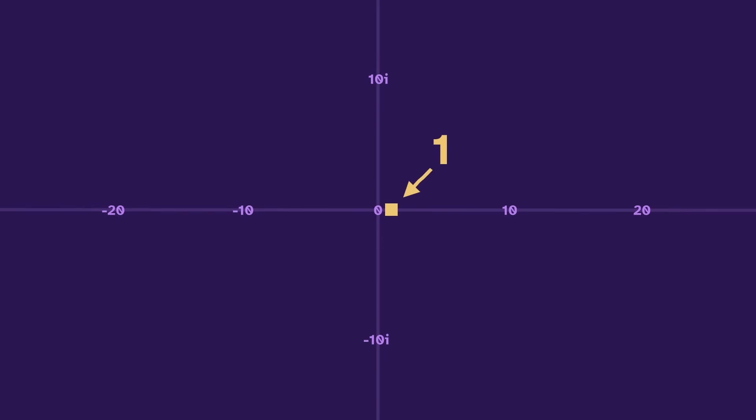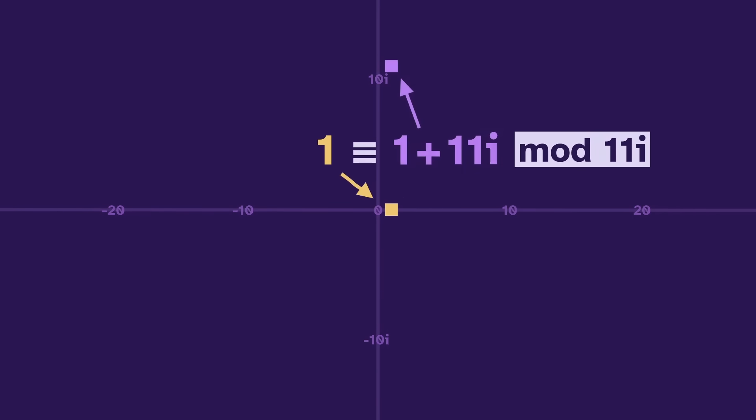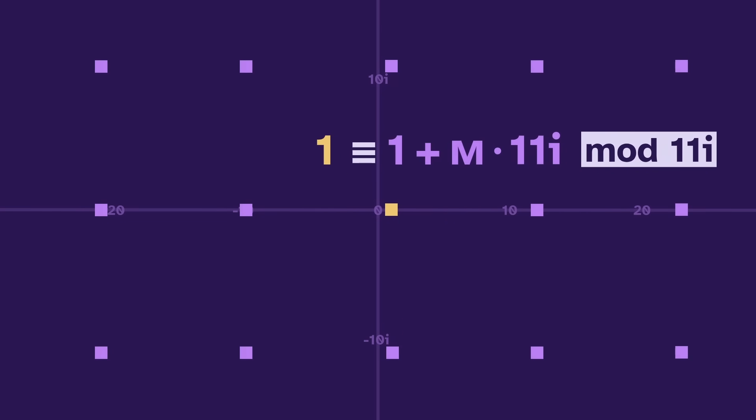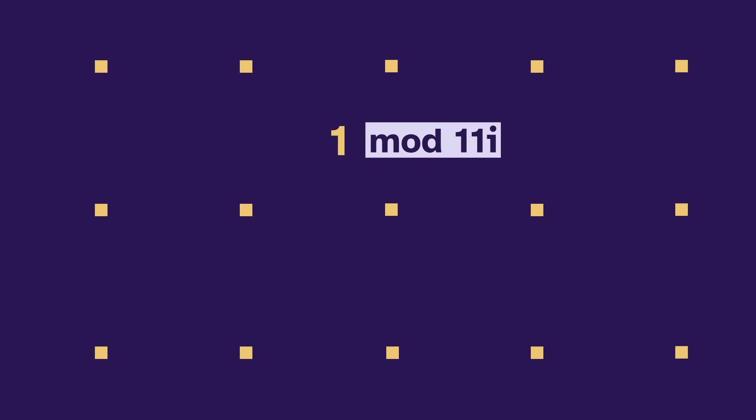This is the number 1 — actually it's a bunch of rectangles. This is 1, but we're calculating mod 11i, meaning that 1 is congruent to 1 plus 11i, and 1 minus 11i, and 1 plus any multiple of 11i. So this is the first frame: everything congruent to 1, mod 11i.